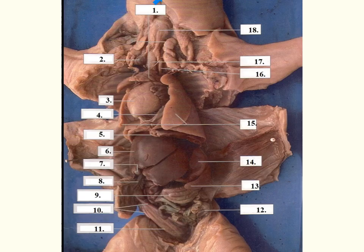After you have made that initial incision down the length of the fetal pig's body and you've cut and opened up the areas around the forelegs, you'll make little slits and open those up as flaps. Now we have the internal structures of the fetal pig exposed, and we will begin with the anterior surface and work our way down.